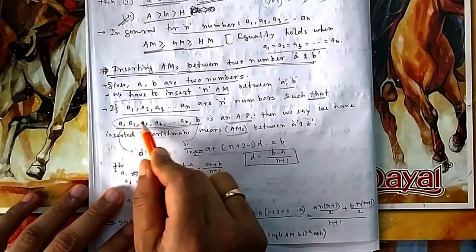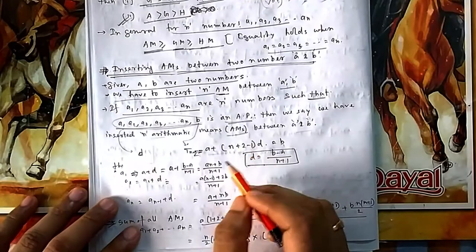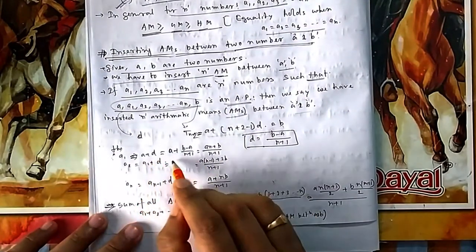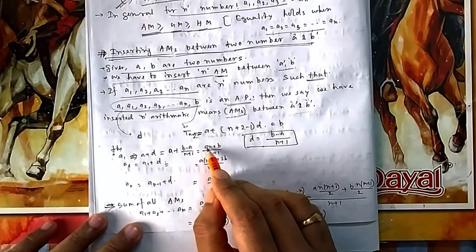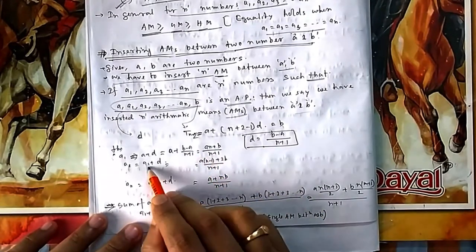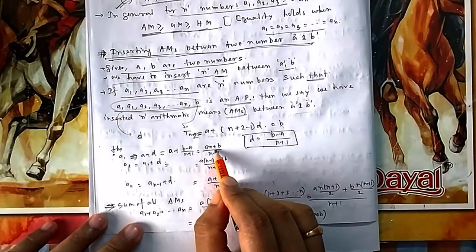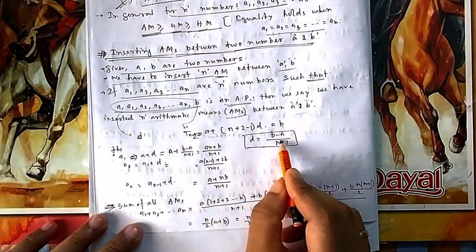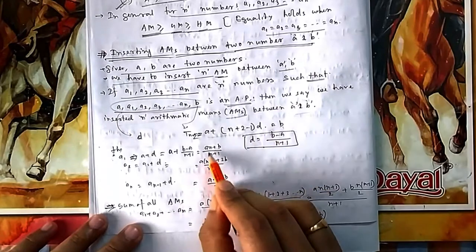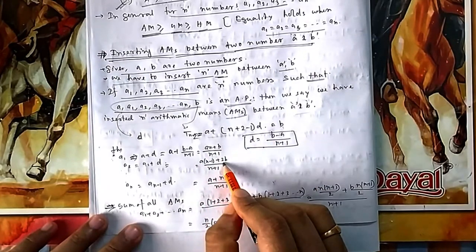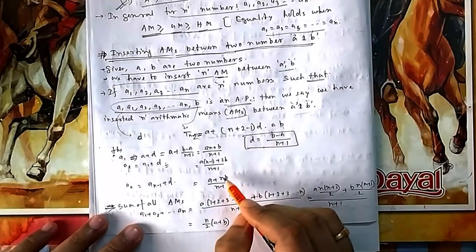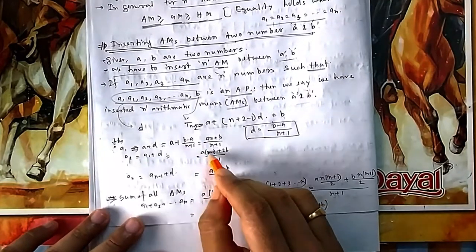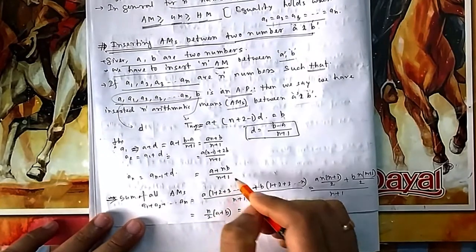Once you know d, you can find a1 = a + d, a2 = a1 + d, a3 = a2 + d, and so on easily. If you substitute, a1 = (na + b)/(n+1). If you keep adding d, a will decrease by one factor and b will increase, giving you the subsequent terms up to the last AM.